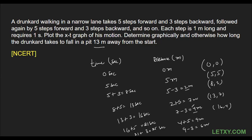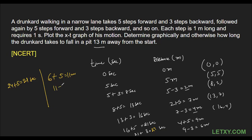Again he moves five steps forward: six plus five equals eleven meters. The time is twenty-four plus five equals twenty-nine seconds. Then he comes back three steps backward: eleven minus three equals eight meters, and twenty-nine plus three equals thirty-two seconds.